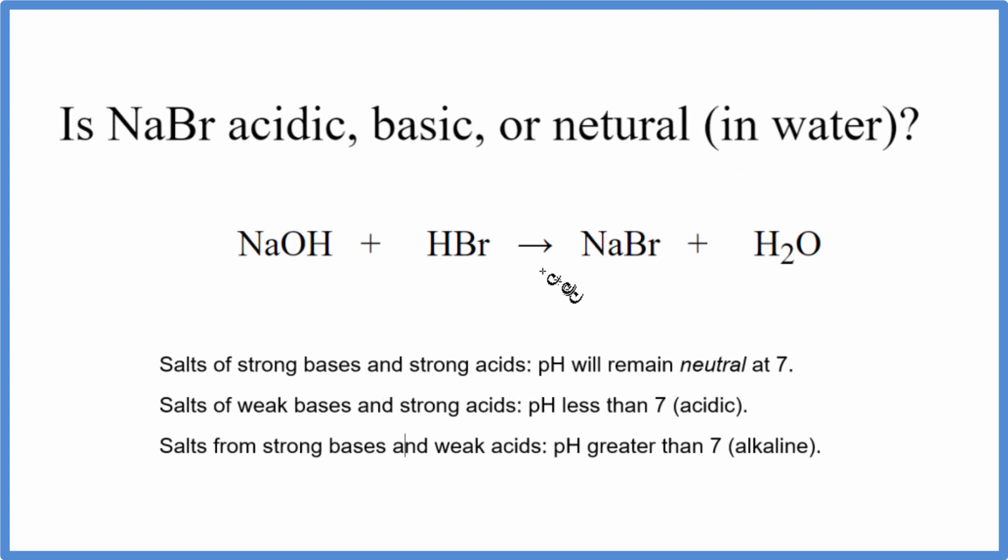The first thing we need to know is the neutralization reaction that would produce the NaBr, the sodium bromide. For that to happen, we'd have sodium hydroxide plus hydrobromic acid. They would neutralize each other. We'd get this sodium bromide and water. It's a neutralization reaction.